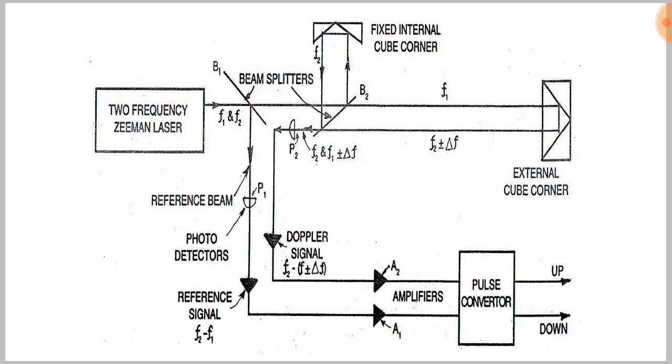The photo detector P1 receives signal and changes the reference beam f1 and f2 into electrical signals. The two amplifiers A1 and A2 separate the signals from B1 and B2 as f2 minus f1.